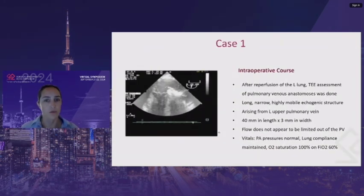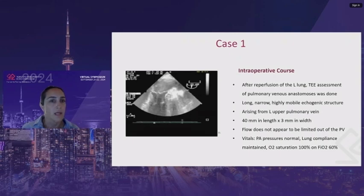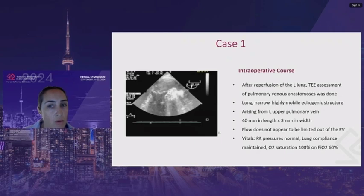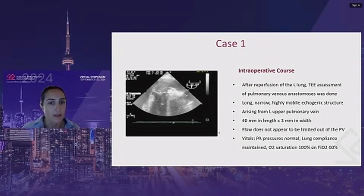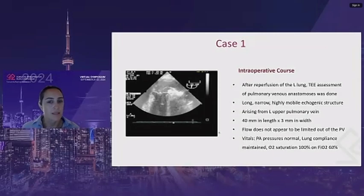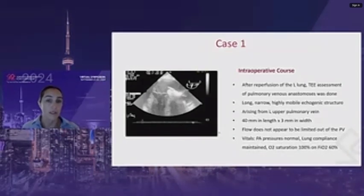After reperfusion of the left lung, TEE assessment of the pulmonary vein anastomosis is done. On the image, you see a long, very thin, mobile echogenic structure arising from the left pulmonary vein. Flow doesn't appear to be limited out of the pulmonary vein. The vitals remain stable, PA pressures don't go up, lung compliance remains stable, and the patient is satting 100% on FiO2 of 60%.